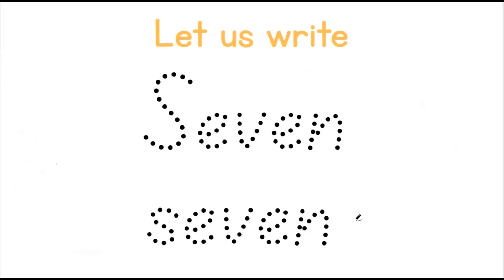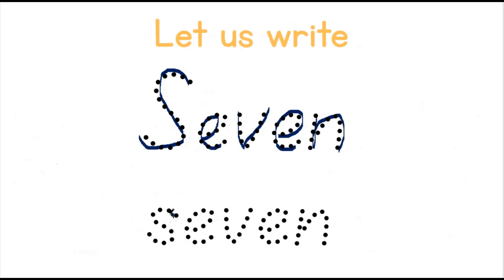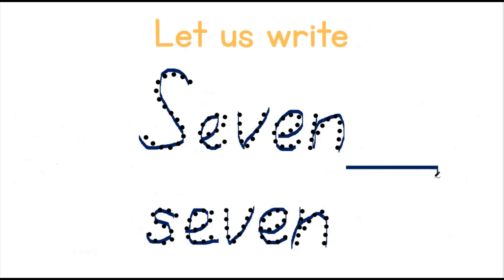Let us write 7. This is how we write 7 in words: S-E-V-E-N. S-E-V-E-N. And this is how we write the number 7 in numbers: straight and down. Straight and down. Until next time, goodbye.